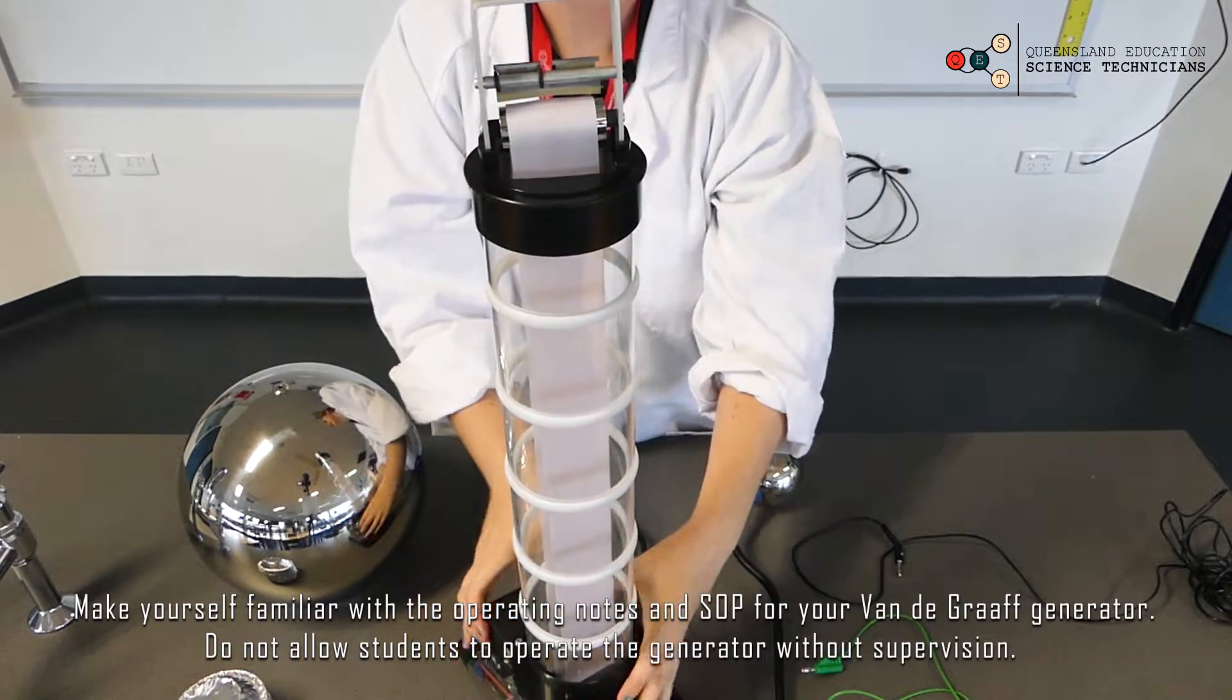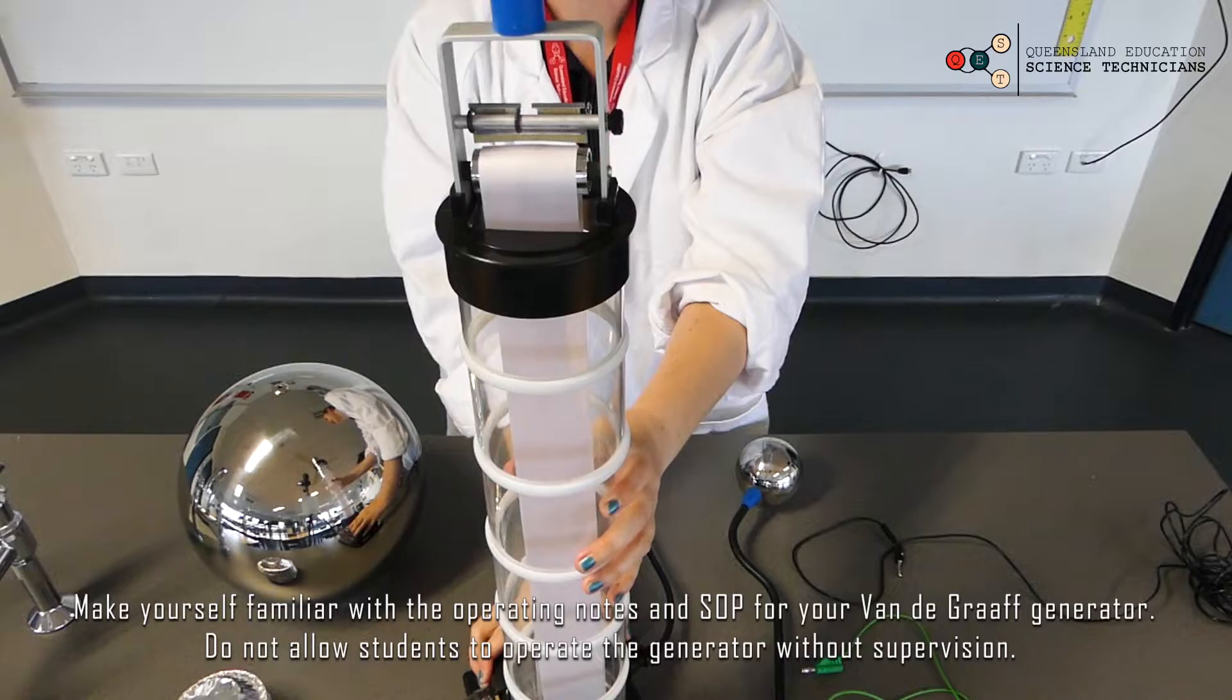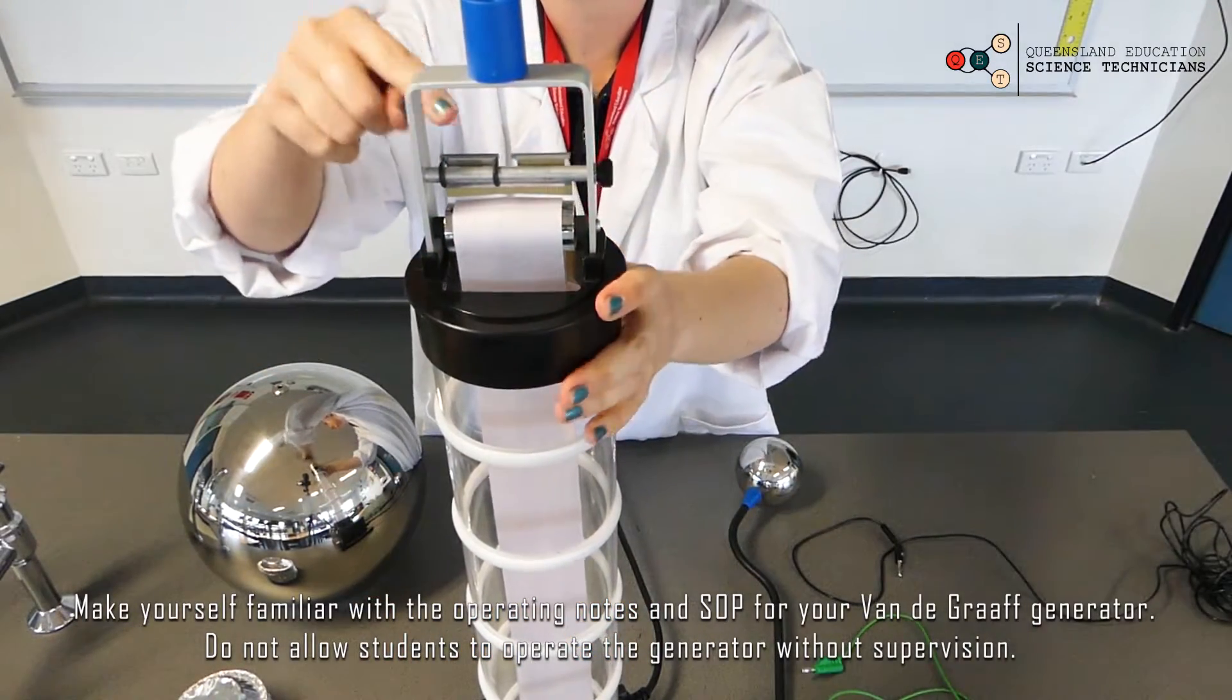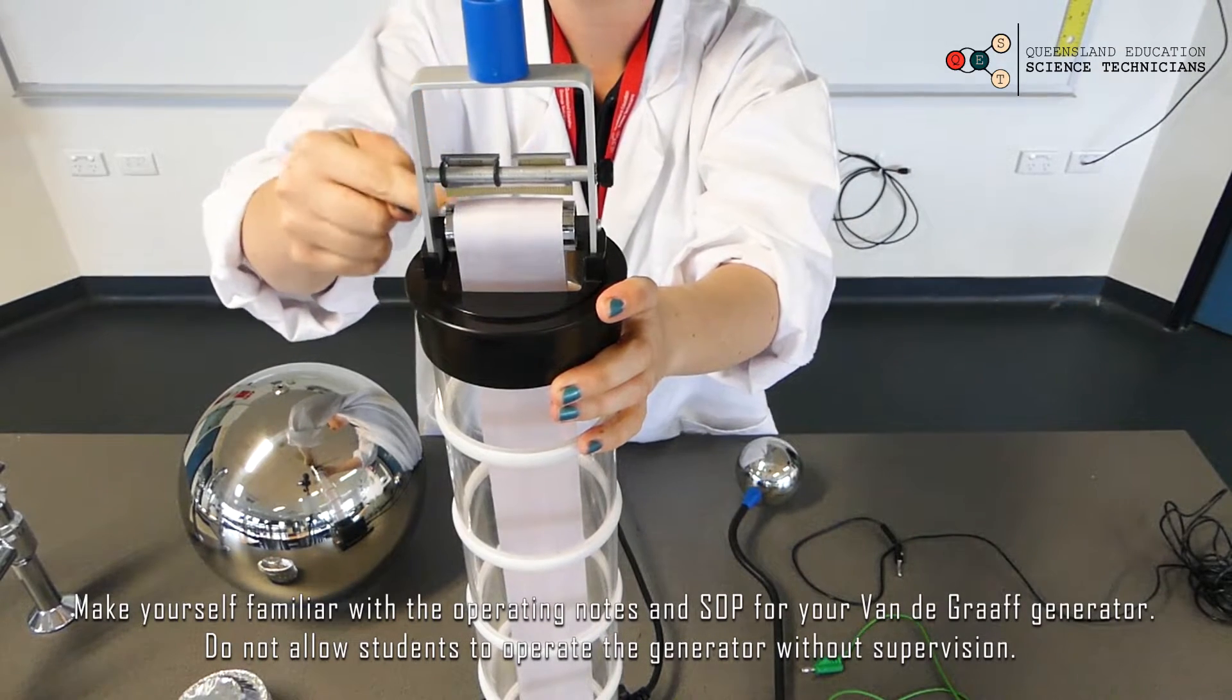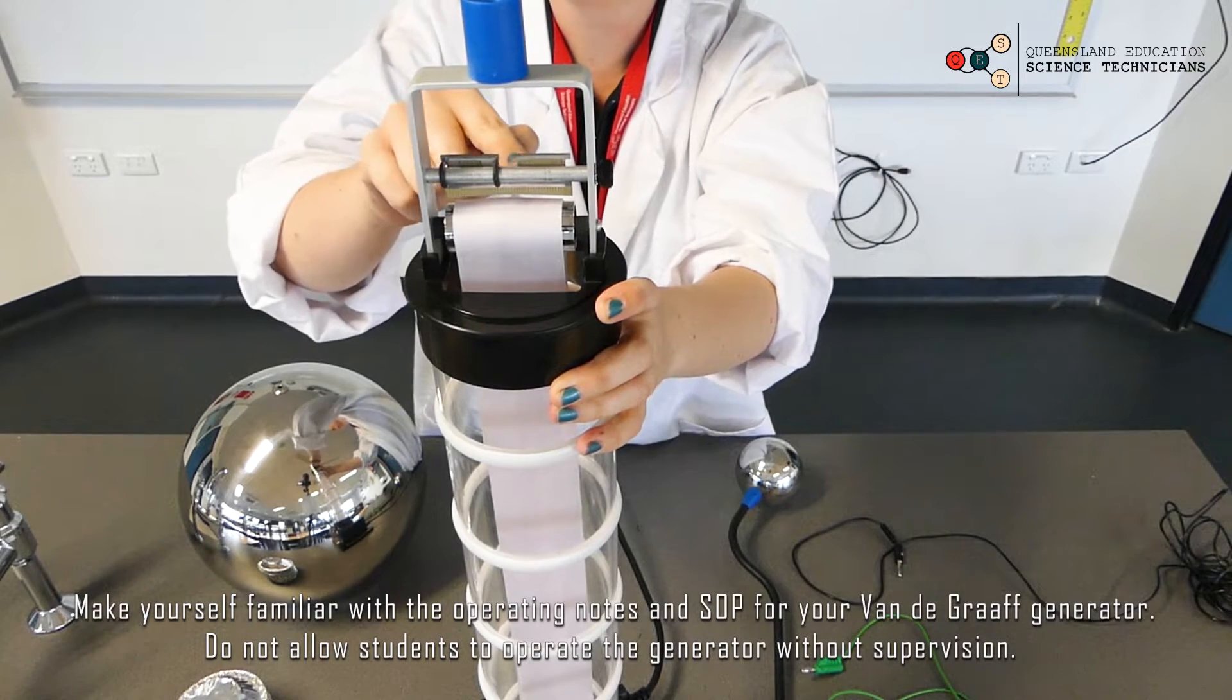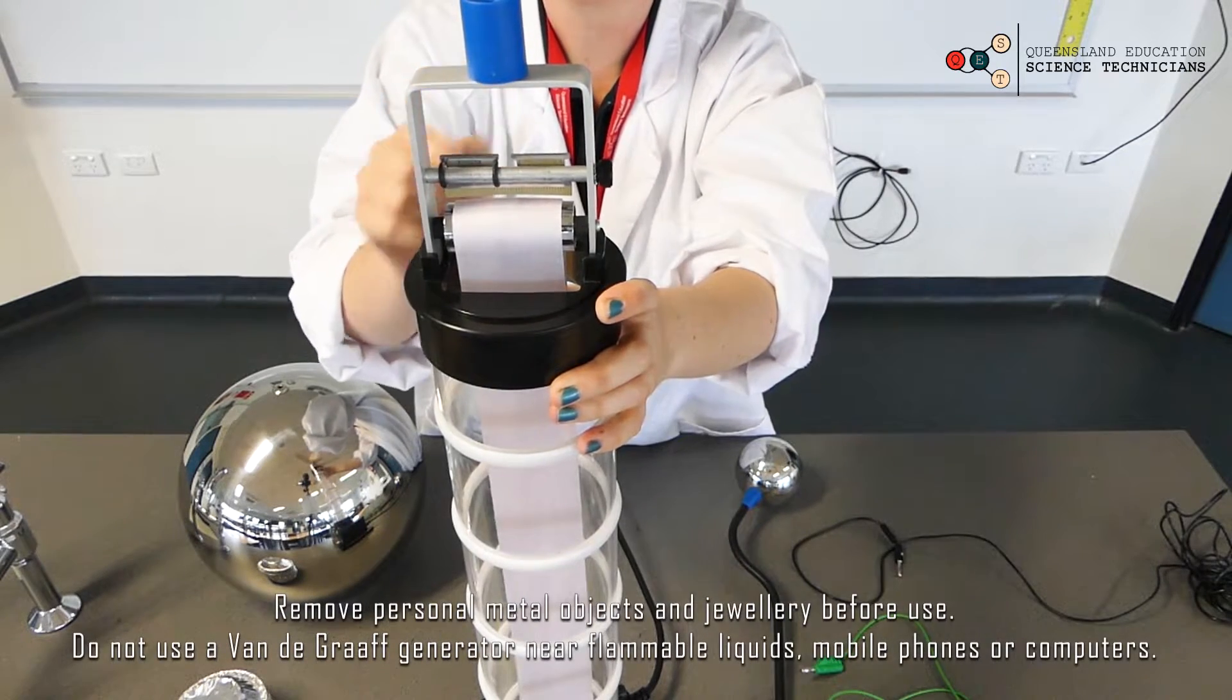So now you can see that at the top of the Van de Graaff there is a comb and the band that runs through the center of the column and they are very close together but they are not touching, they are just close together.